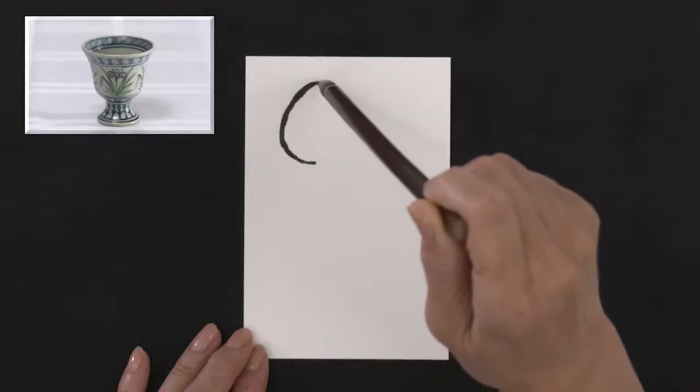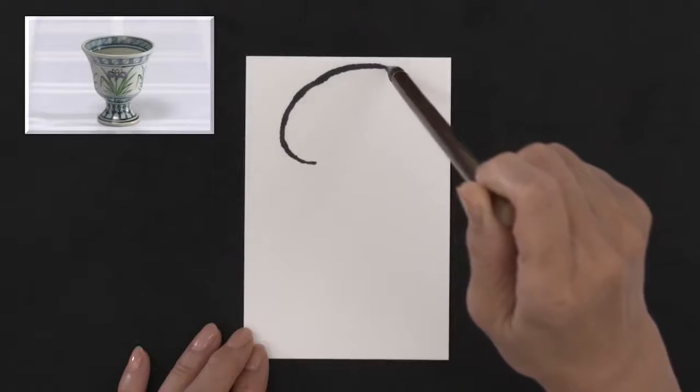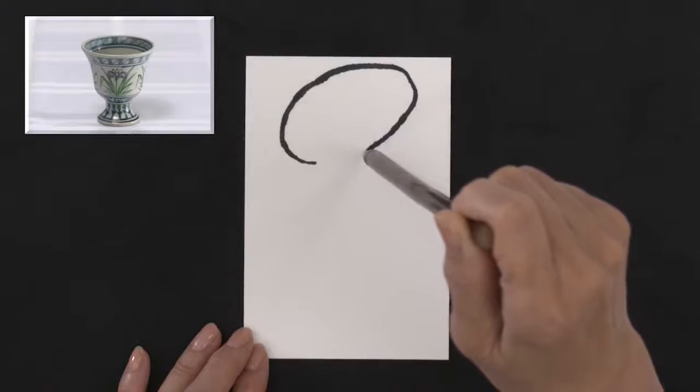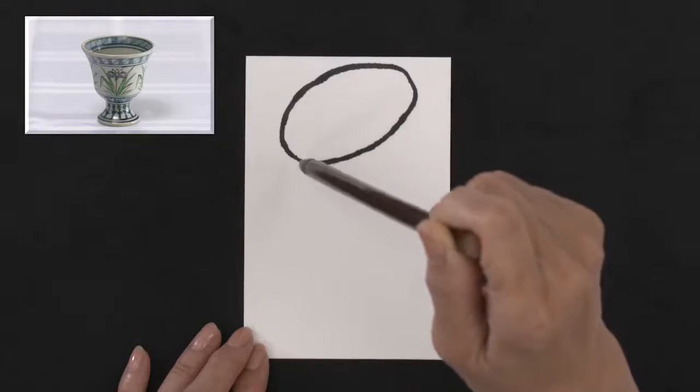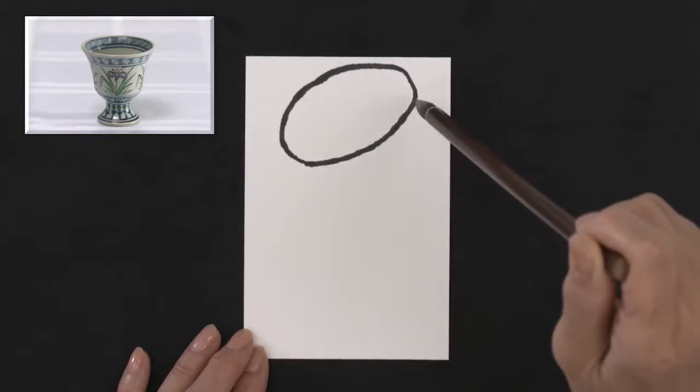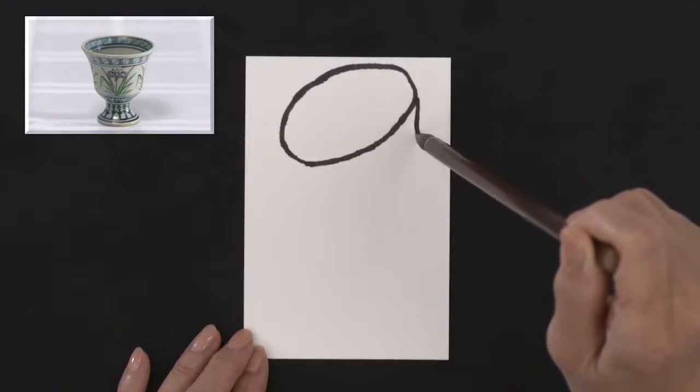Soak the ink brush with ink and draw the shape. To make the drawing more interesting, let's draw it at an angle. First, draw the lip of the cup. This will determine the size of the cup.